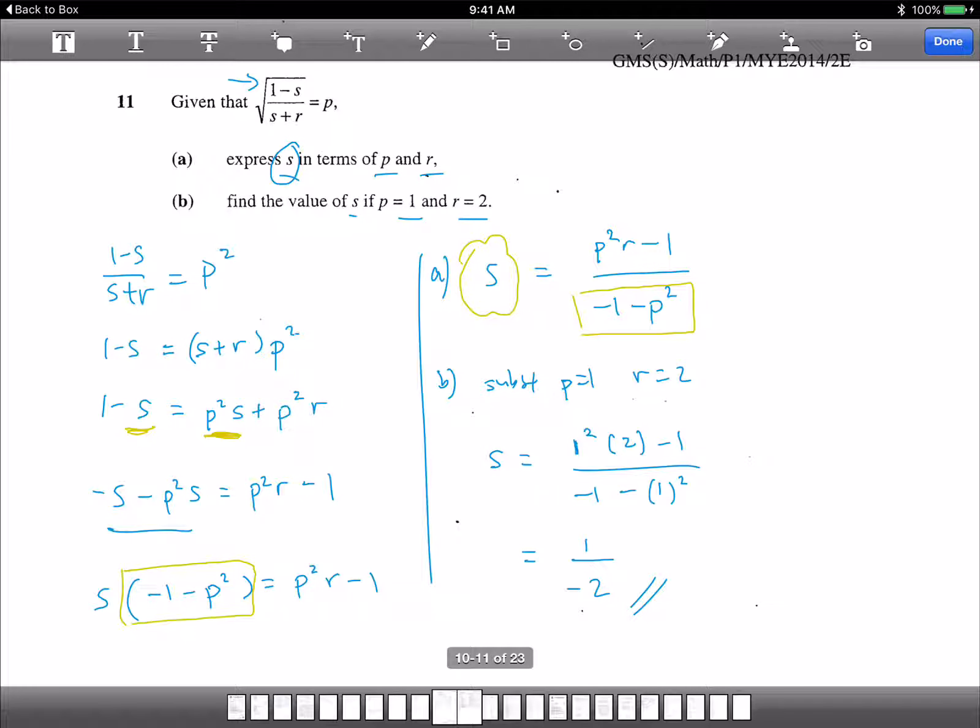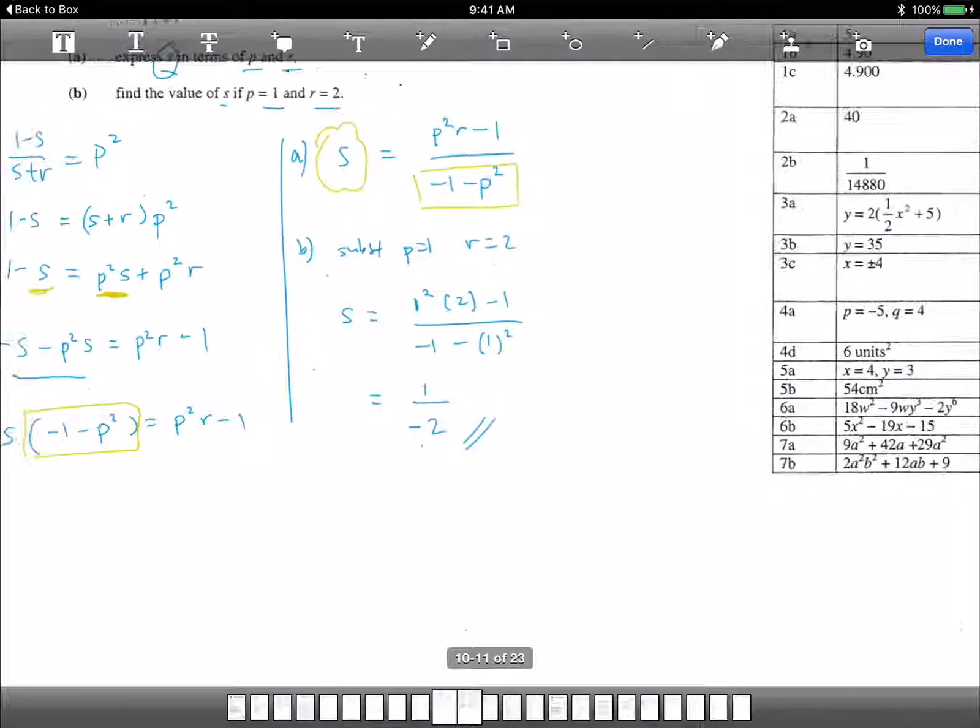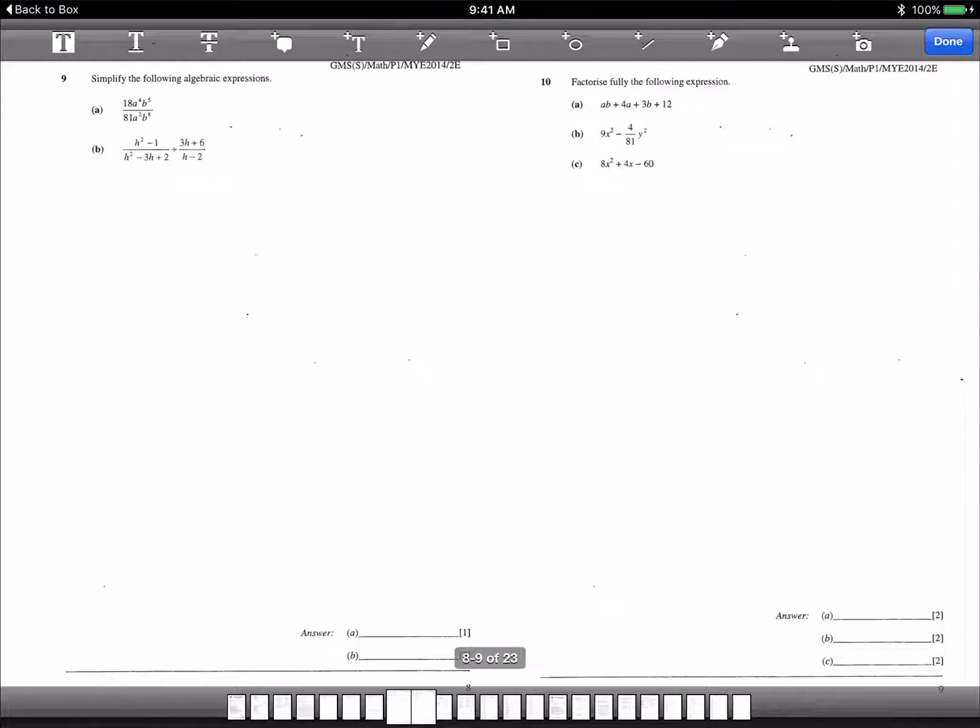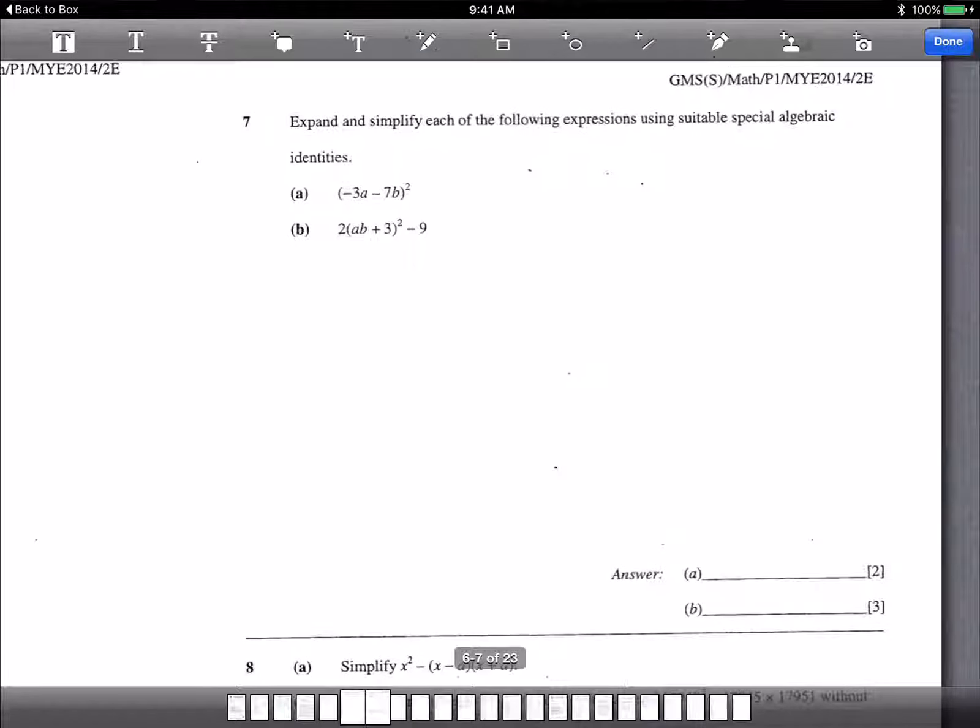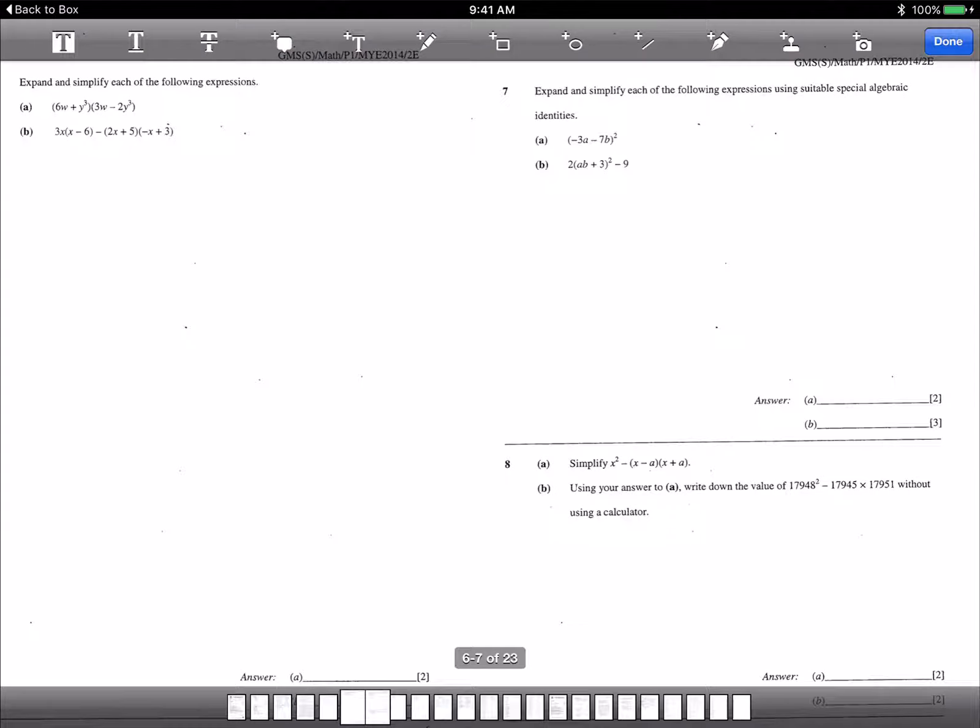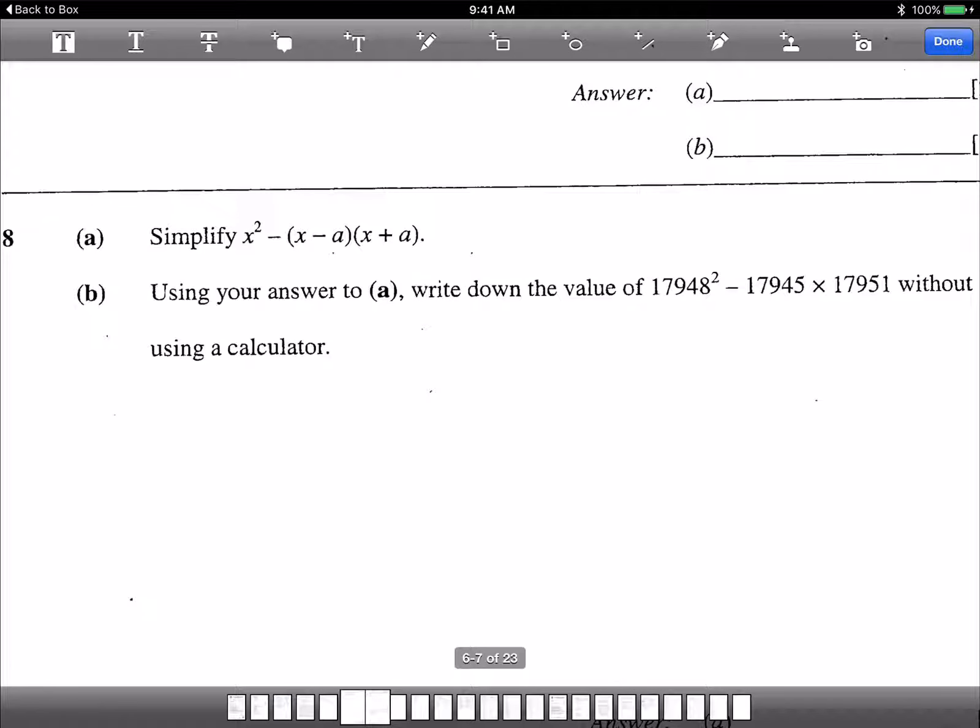What's the next one that's difficult? Let's take a look. This one is difficult. It's time. Very common, Question 8. Simplify this and use your answer to work out the value without using a calculator. This is Question 8.